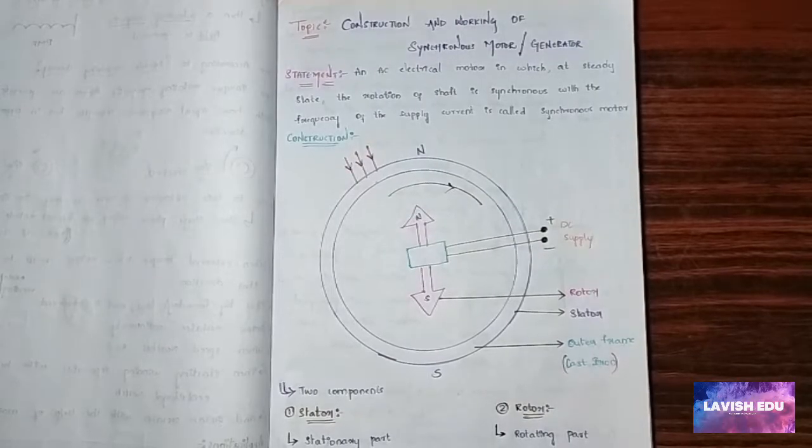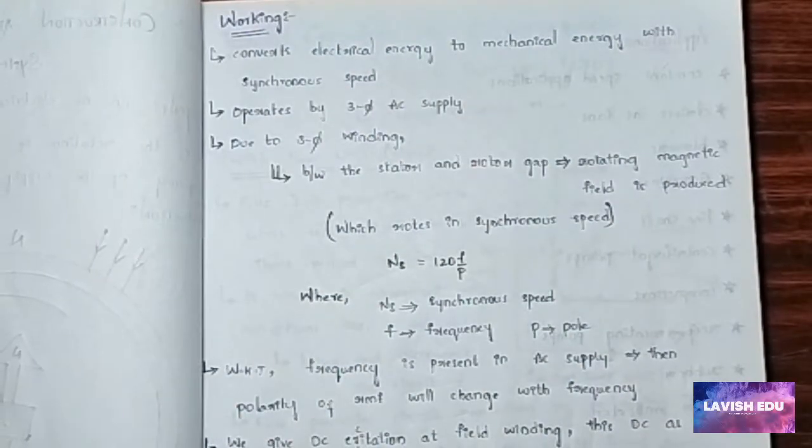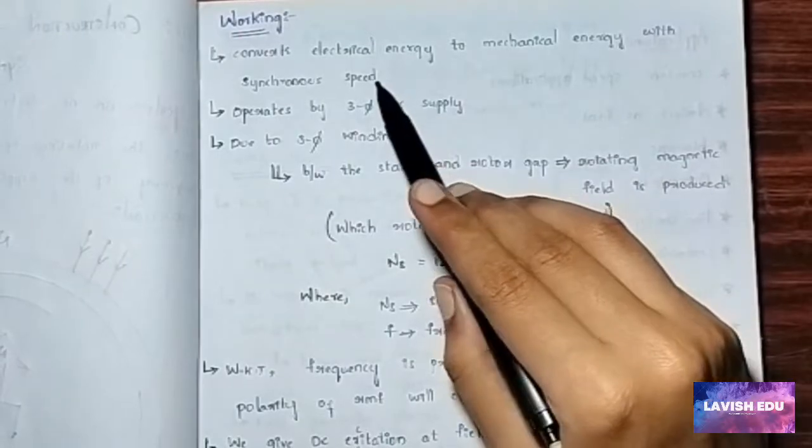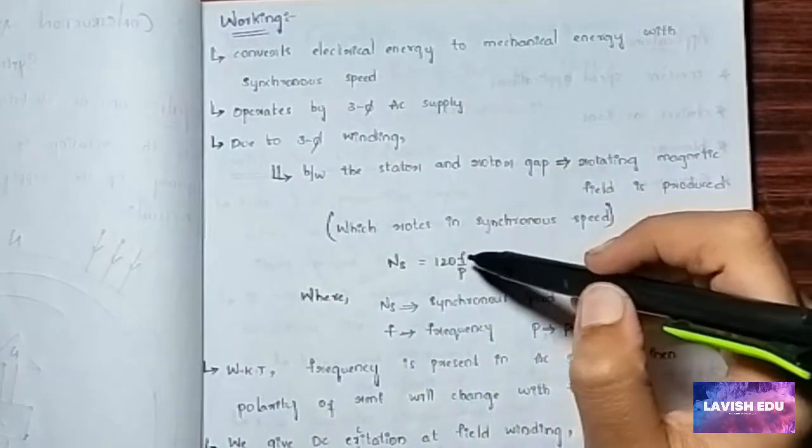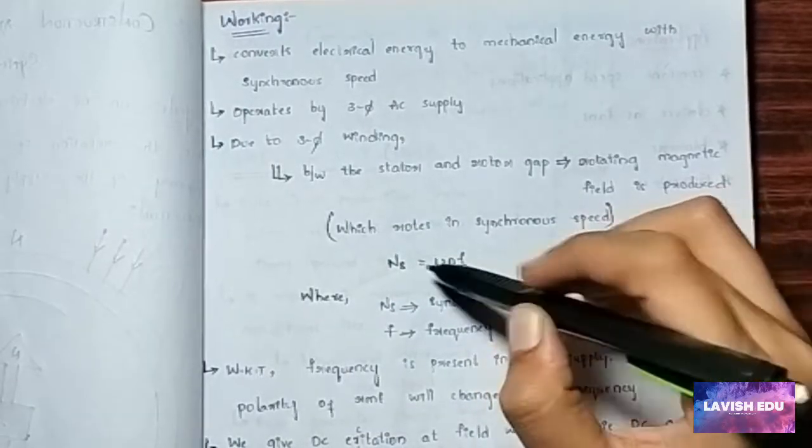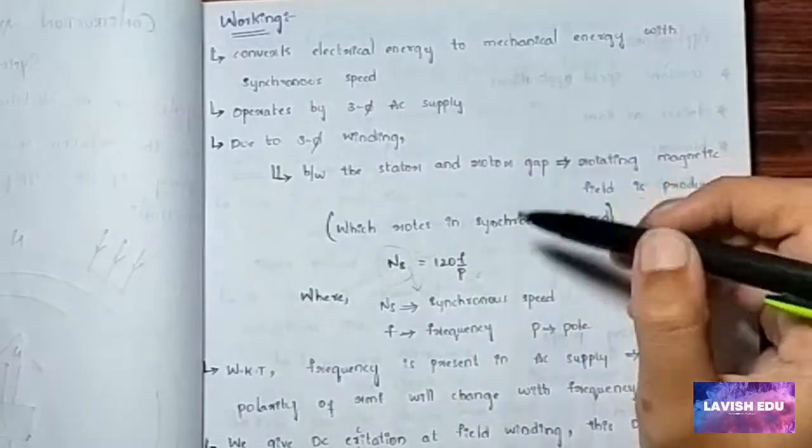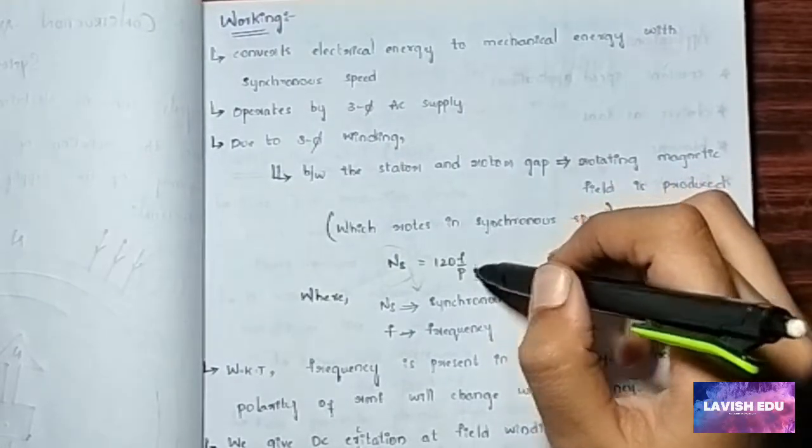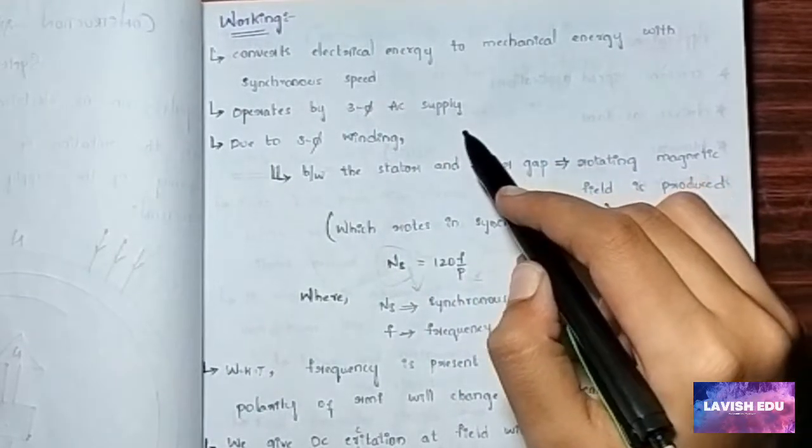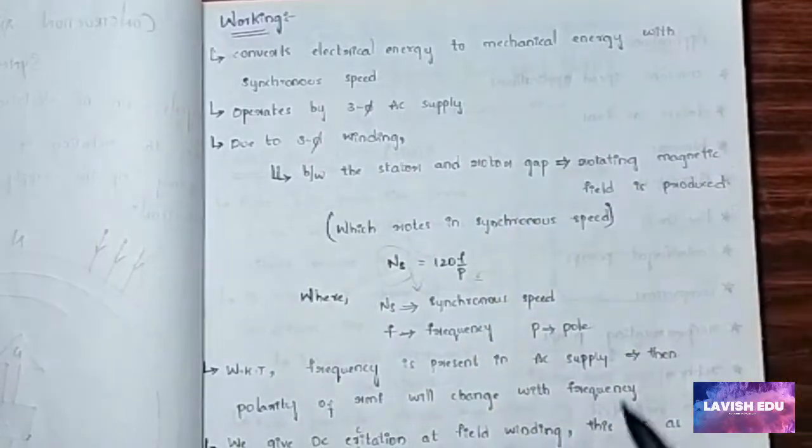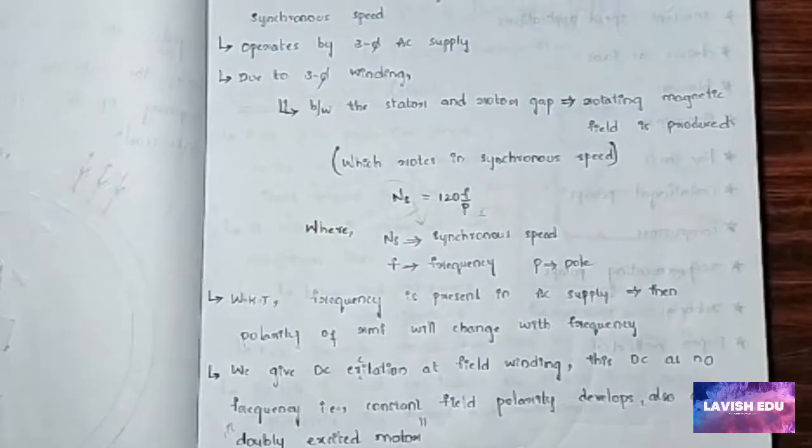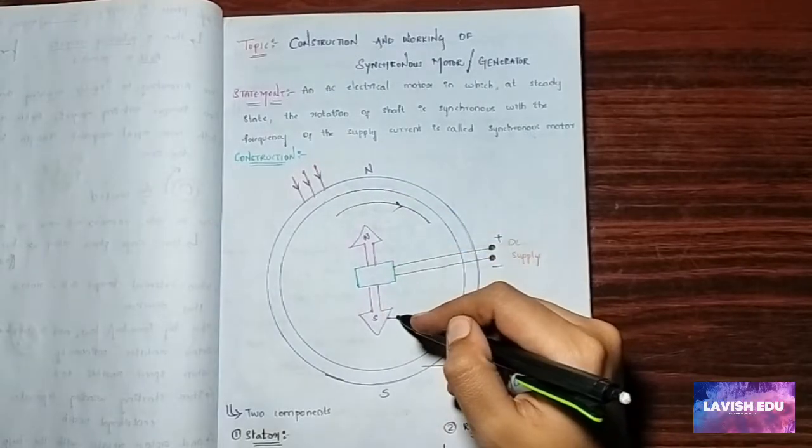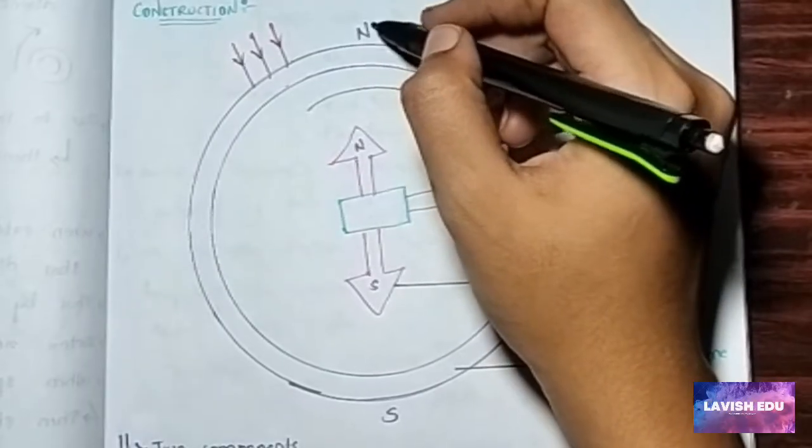Now we will see the working of the synchronous motor. Synchronous motor converts electrical energy to mechanical energy with synchronous speed. We know that the synchronous speed formula is Ns equals 120f by P, where Ns is the synchronous speed, f is the frequency, and P is the number of poles. It operates by three-phase AC supply.